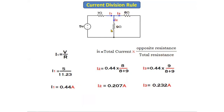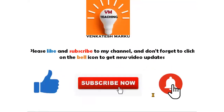Remember, in the current division rule formula, we only write the resistances where the current is dividing — we do not include the series resistance. This is about the current division rule and how to apply it to a given problem. In the next class we will discuss further topics. Thank you, everyone.